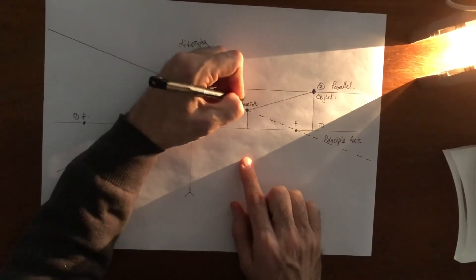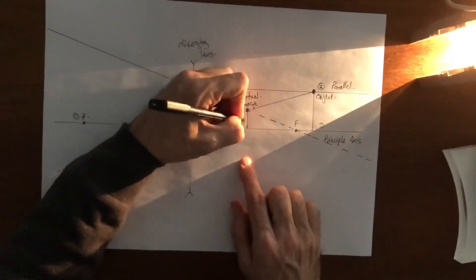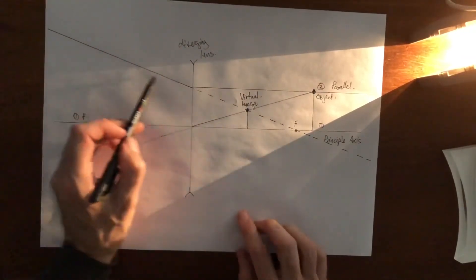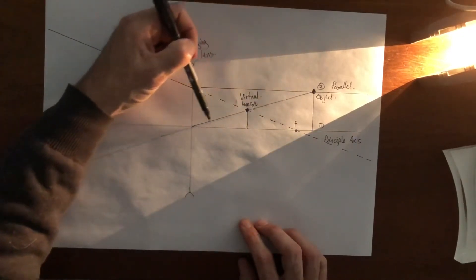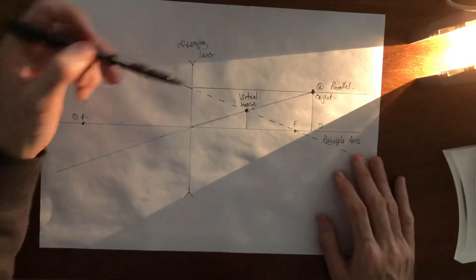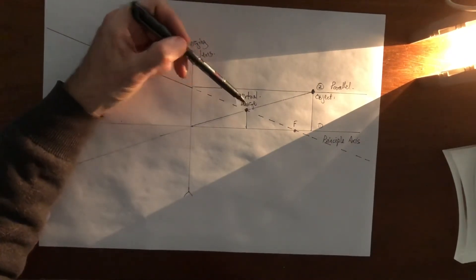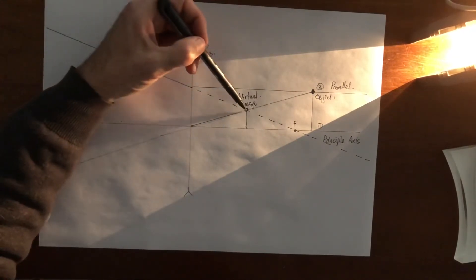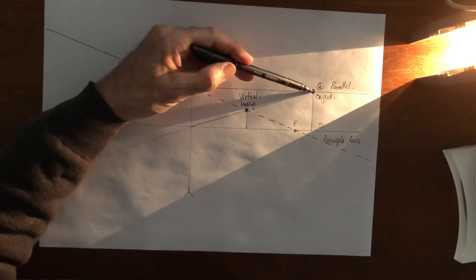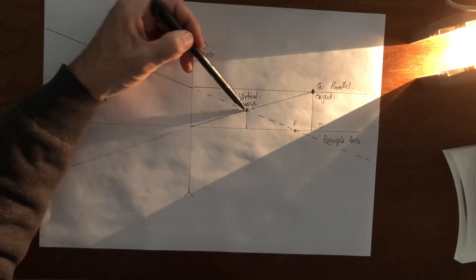This image is what we call a virtual image. The virtual image is formed where the continuation of this diverging ray and the incident ray meet. The image is virtual because we've got a dotted line involved. It's inside the focal point, on the same side of the lens as the object itself, much smaller than the object, and it's upright — not inverted.